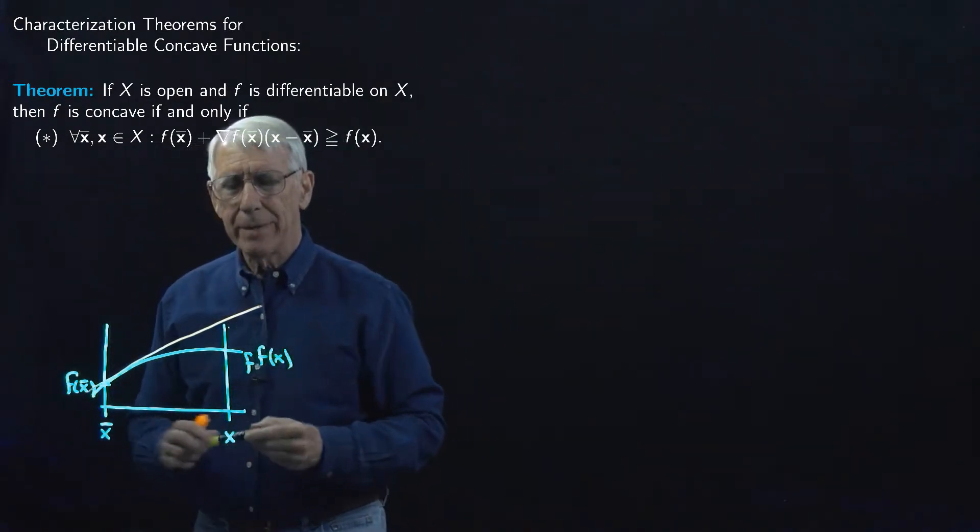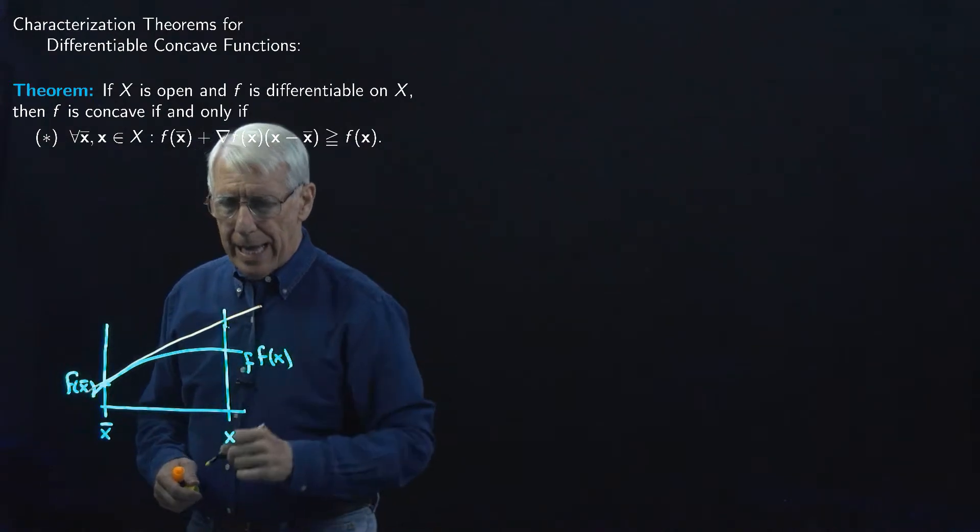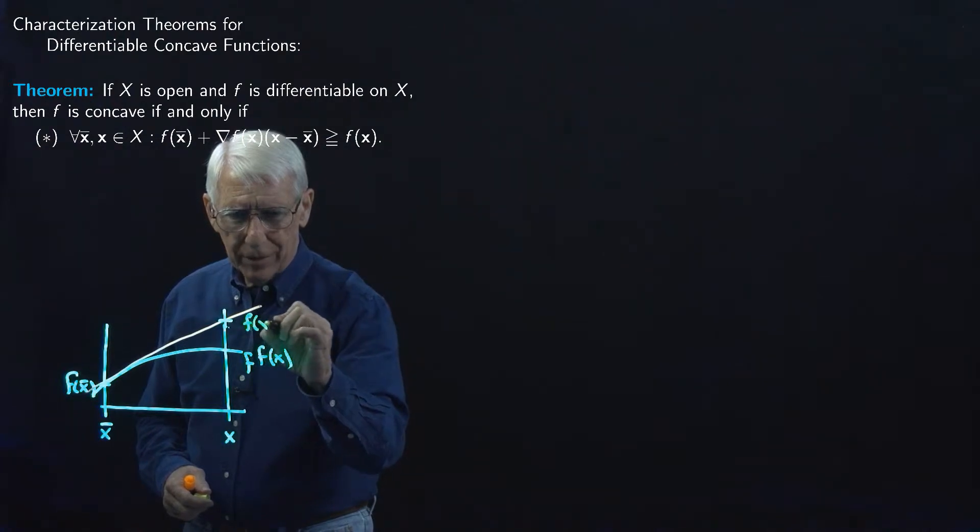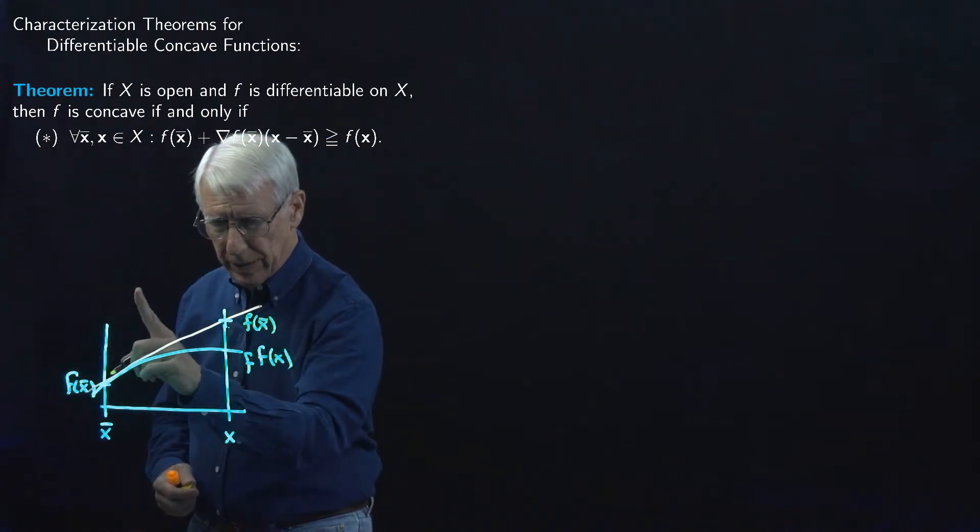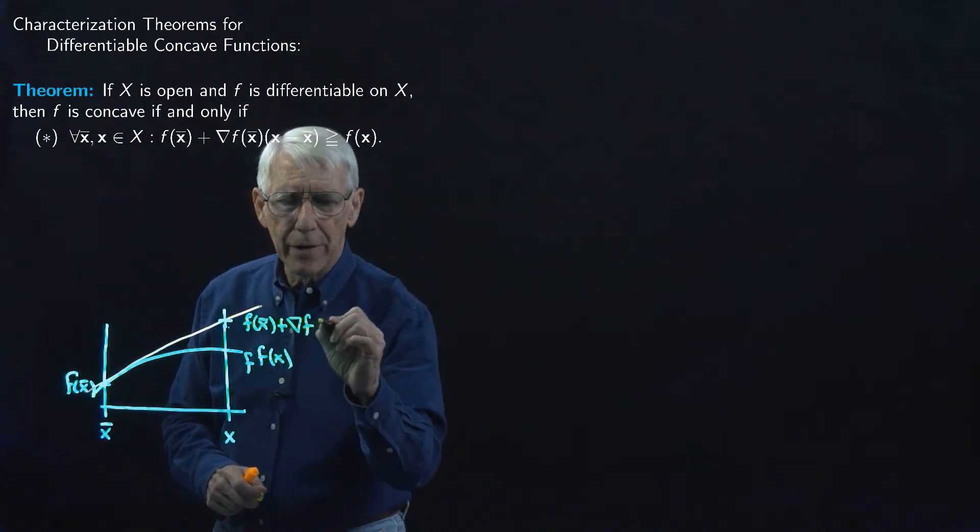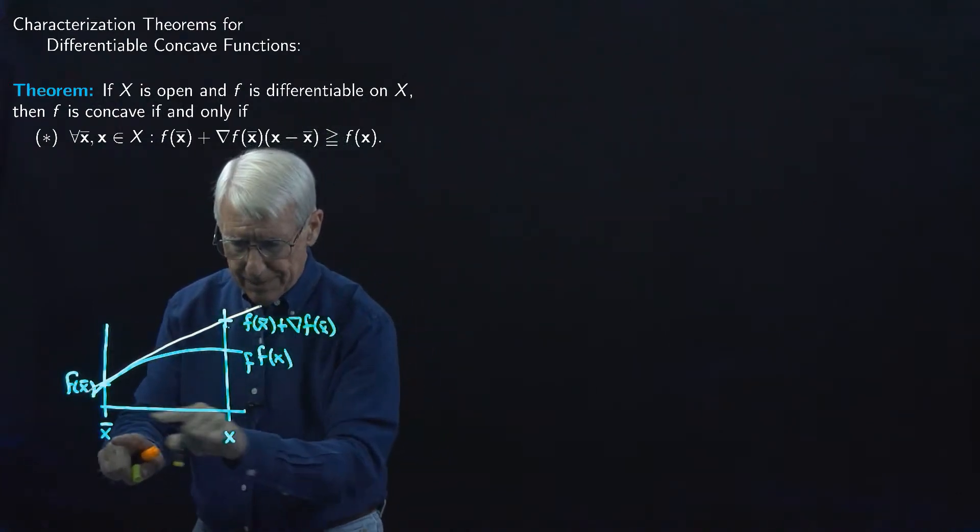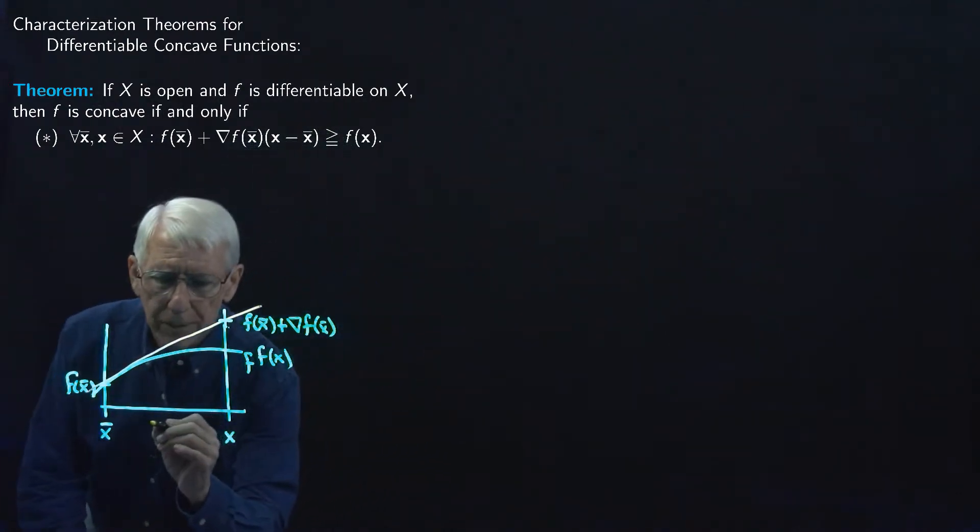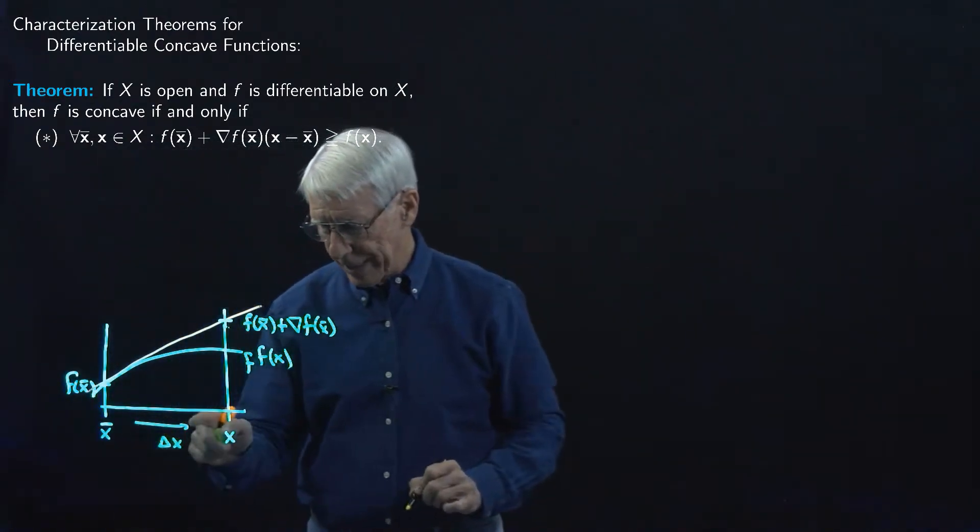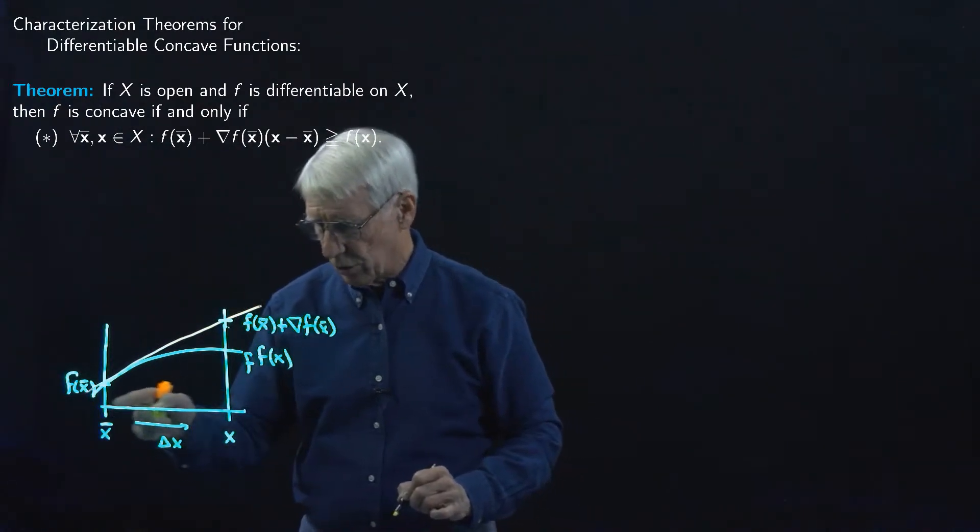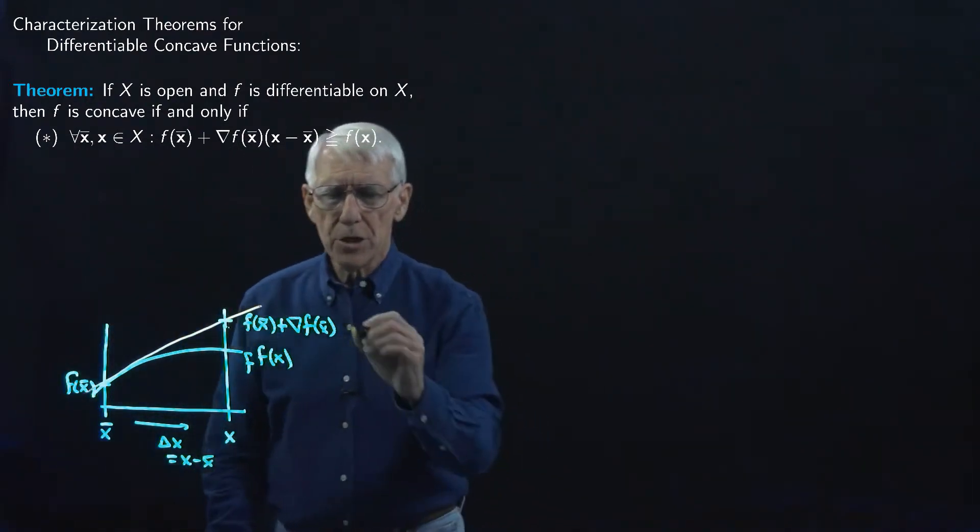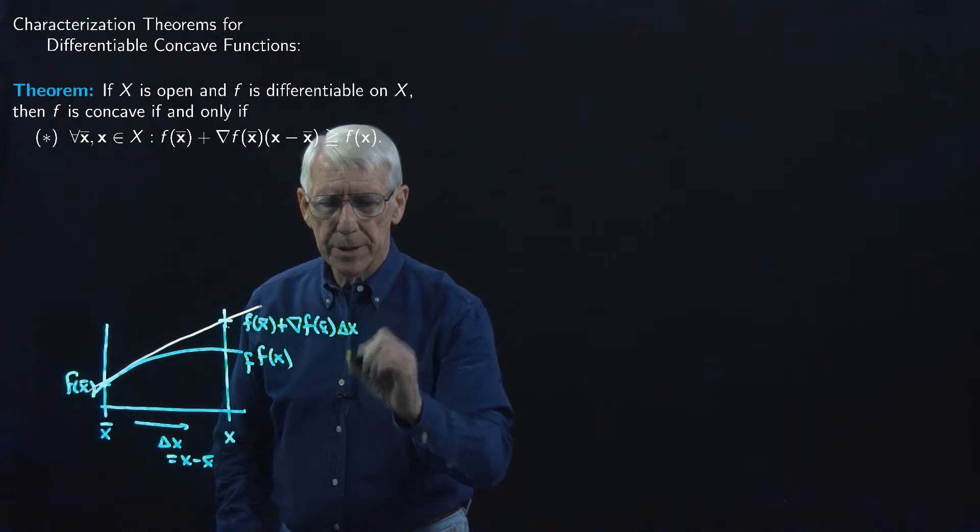Over here we have F of X. And what this condition says then is that if I take my gradient of F at X-bar, that's supposed to be a tangent there, so I take my gradient. This point here is going to be F of X-bar, this vertical value, plus the gradient of F at X-bar times this difference X minus X-bar, which I'm going to refer to as delta X. So delta X, I only drew the arrow this far, but it's this whole X minus, in fact, let's say that's X minus X-bar.